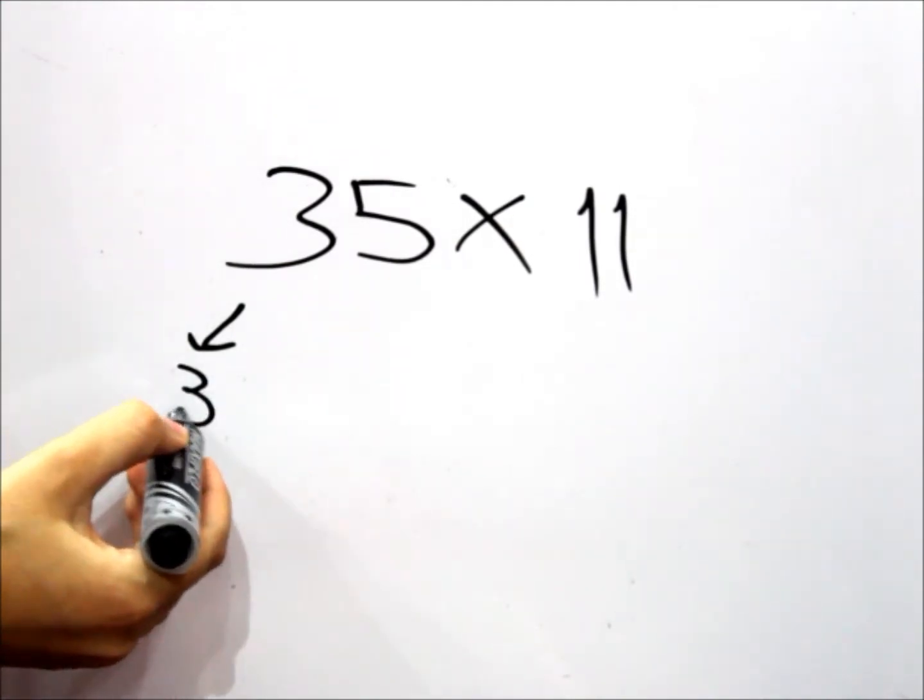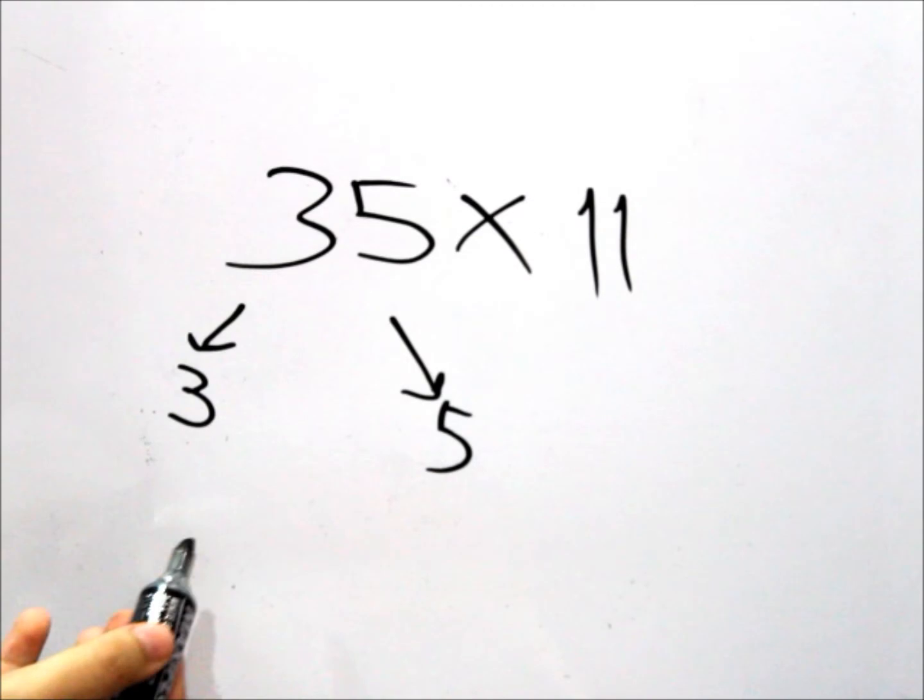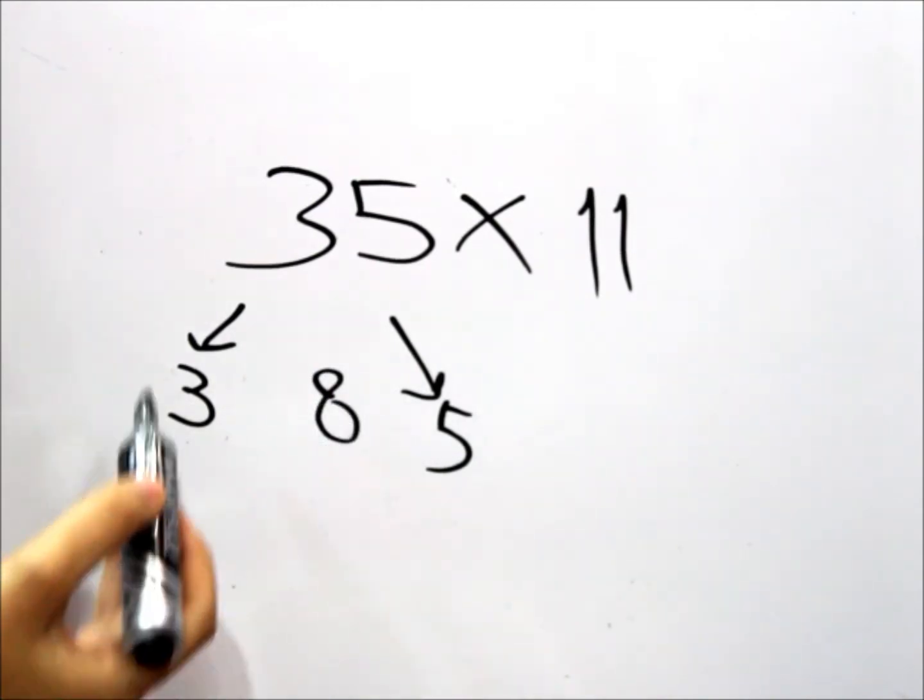Put down the 3 and the 5. Then you add them together. 3 and 5 is 8. You place this 8 in between, in the middle. 385, that's the answer.